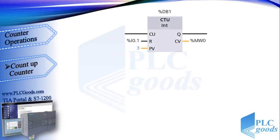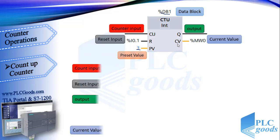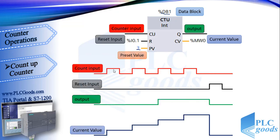Let's start with the count up counter. This is its ladder symbol. This instruction has some inputs and outputs. Like timers, counters need a data block to work correctly. This instruction counts up by 1 when the value of the counter input CU changes from 0 to 1. Similar to timers, here we have reset and preset value terminals. Suppose the preset value is 3.